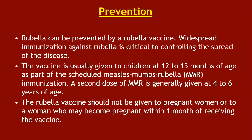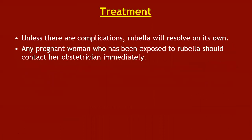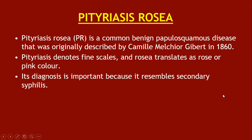Rubella is prevented by the rubella vaccine; widespread immunization is critical to controlling the spread of the disease. The vaccine is usually given to children at 12 to 15 months of age as part of the MMR (measles-mumps-rubella) schedule; a second dose of MMR is given at four to six years of age. The rubella vaccine should not be given to pregnant women or to women who may become pregnant within one month of receiving the vaccine. Unless there are complications, rubella will resolve on its own; any pregnant woman exposed to rubella should contact her obstetrician immediately, who may consider the possibility of therapeutic abortion.